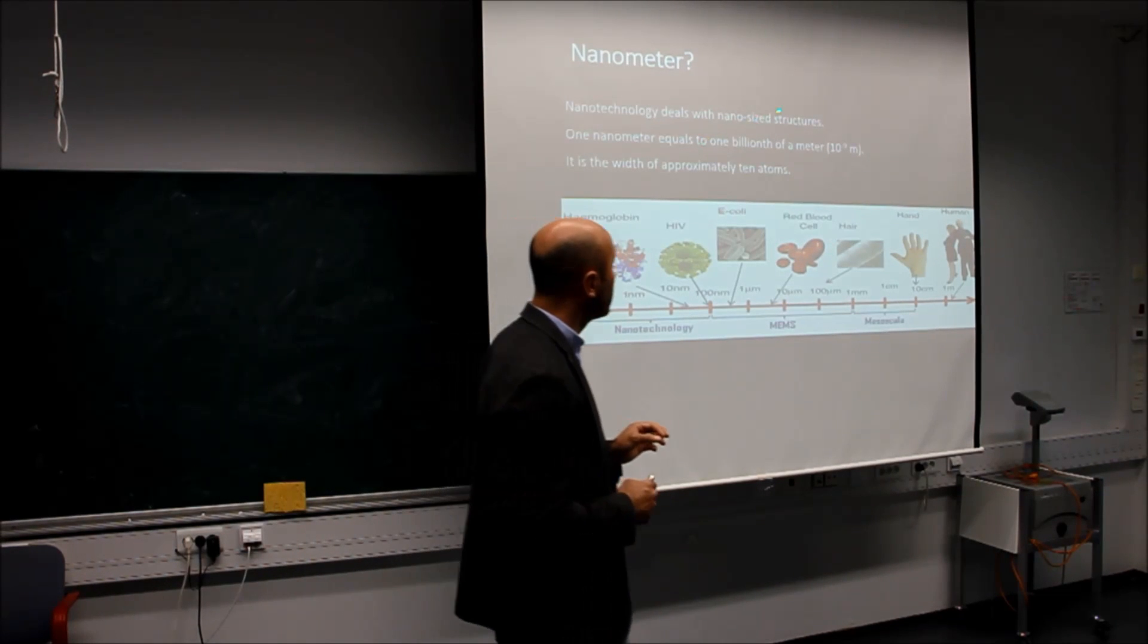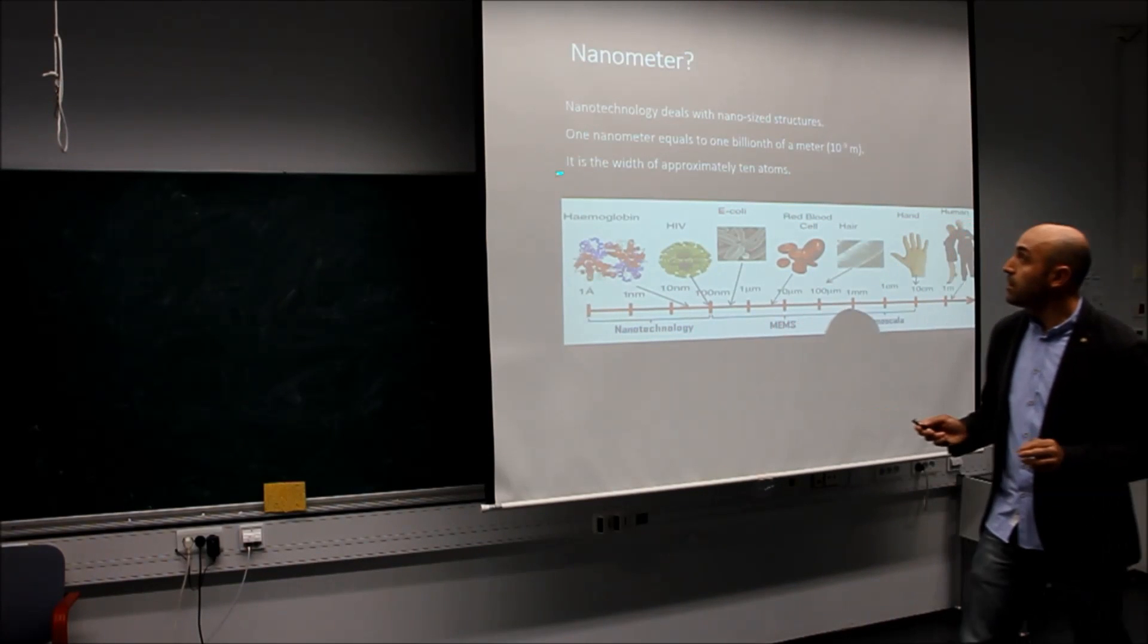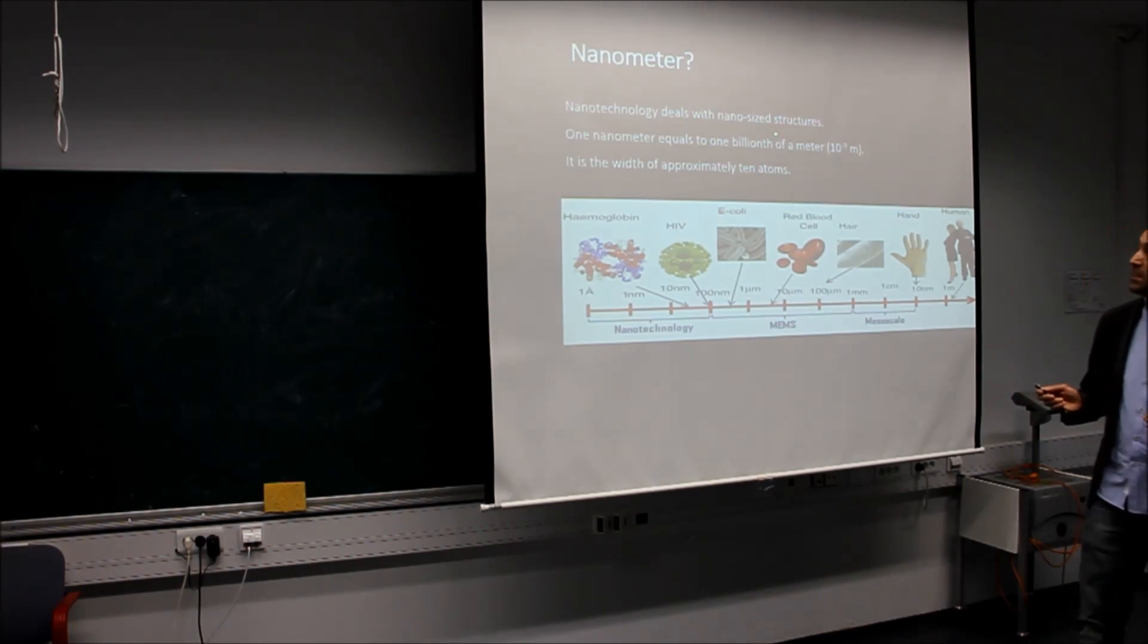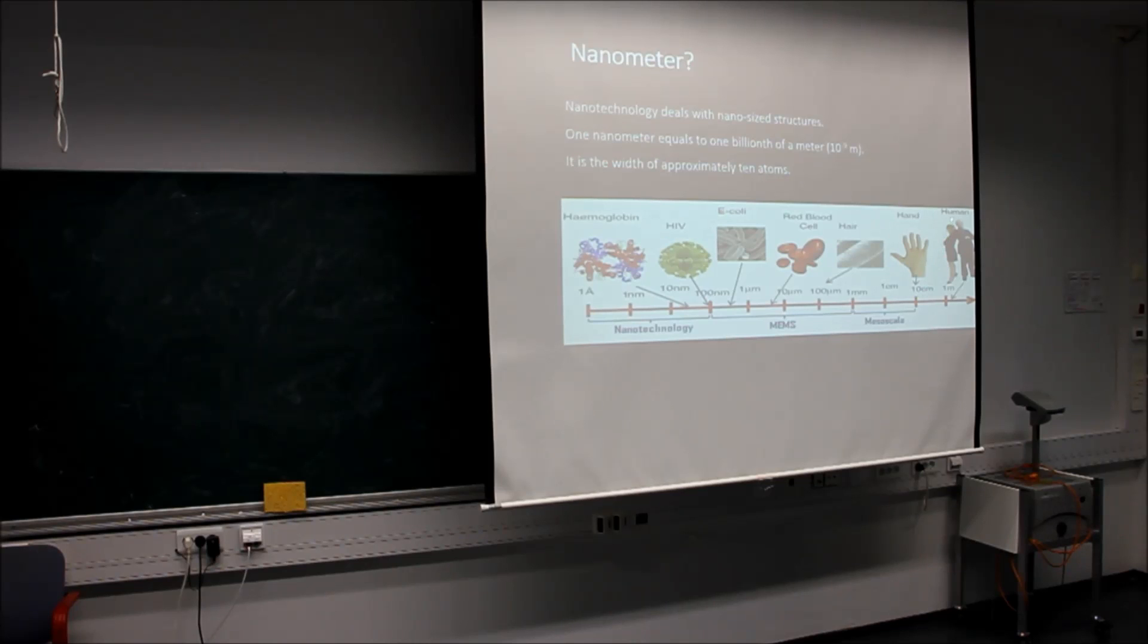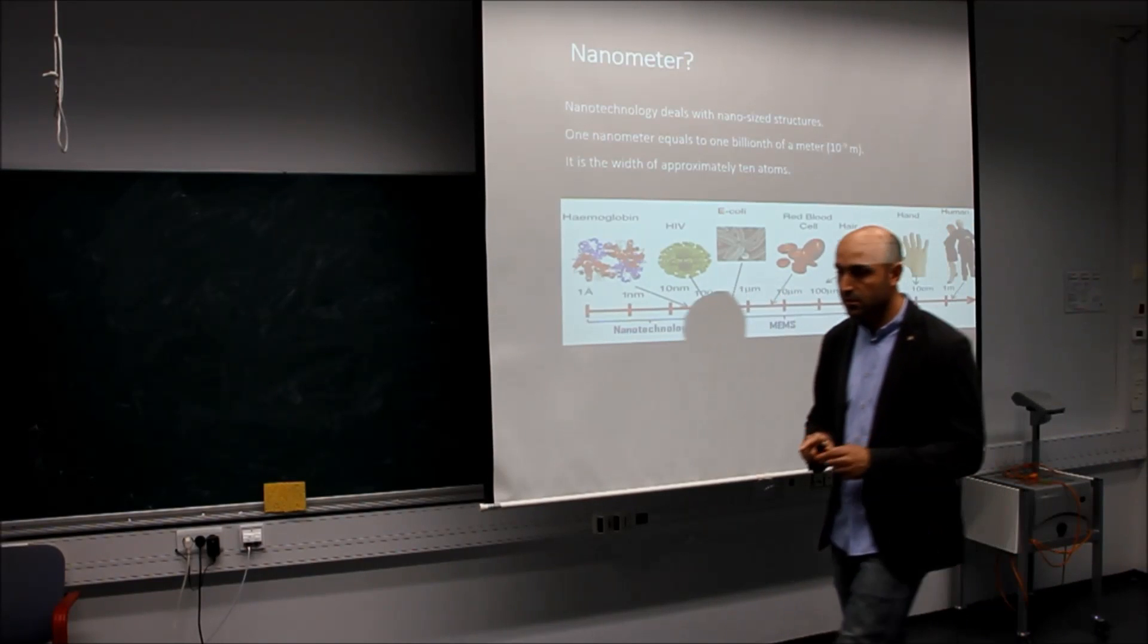So nano scale is important because many materials' characteristics change at the nano scale. It makes nanotechnology important. Nanotechnology deals with nano size structures. One nanometer equals one billionth of a meter. It is the width of approximately 10 atoms. Here are some examples of nanotechnology.